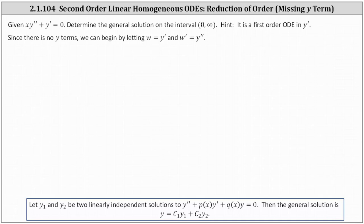to form a first order differential equation. We can let w equal y prime and w prime equal y double prime. Performing substitution gives us x times w prime plus w equals zero, which we can solve using separation of variables.